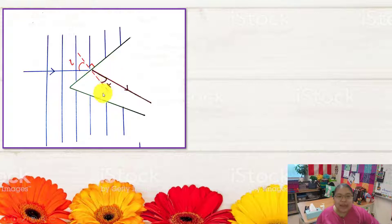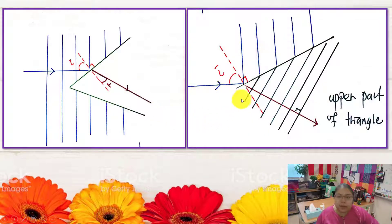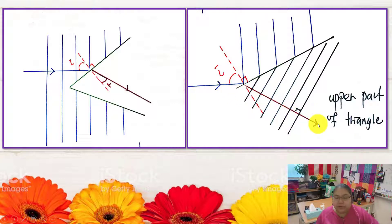Now we draw the wave pattern, which must be 90 degrees with the refracted ray. I draw the wave pattern at 90 degrees with the direction of the refracted ray. This completes the upper part of the triangle. Later we draw the bottom part and join them together to see the full pattern inside the triangle.